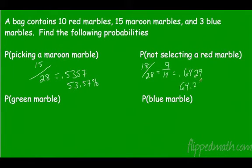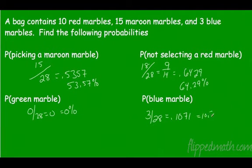Alright, what's the probability of getting a green marble? Are there any green marbles? No, so that's 0 out of 28, which is 0 or 0 percent. And how about a blue marble? Blue marbles, there's three of them out of 28 possibilities. That gives us 0.1071 or 10.71 percent.